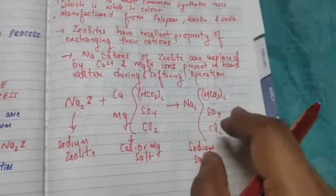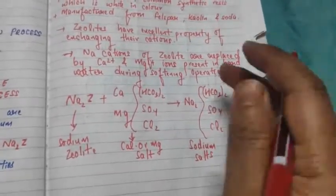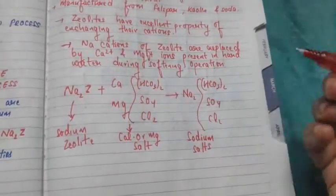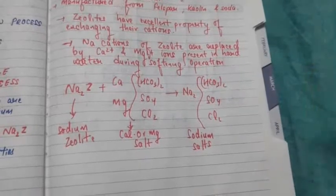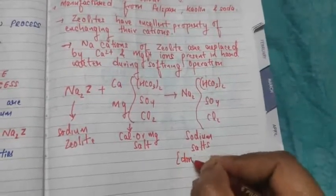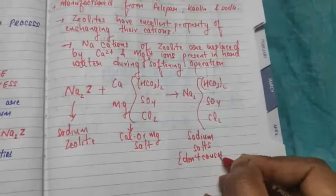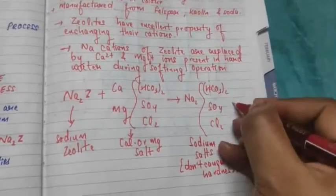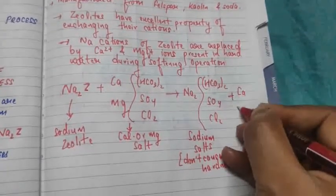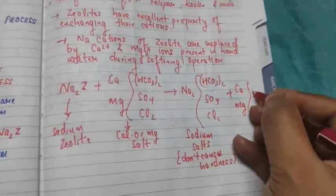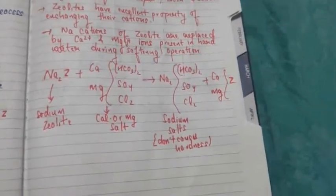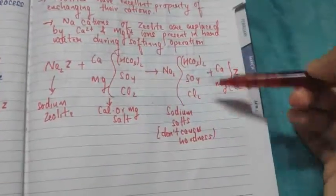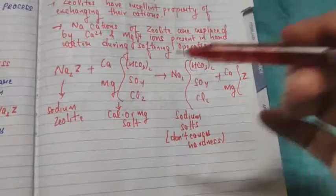The sodium salts produced do not cause hardness, because hardness is produced by multivalent cations — sodium salts contain only monovalent cations. The result is calcium and magnesium zeolites, which are the used-up zeolites.